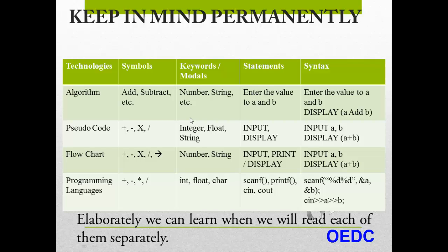For the flowchart we write some of the symbols, and for the programming language we have separate symbols, keywords, statements, and their corresponding language to learn separately. Some of the symbols, keywords, and statements — syntaxes for the flowchart — and for the programming language we have separate symbols, keywords, statements, and their corresponding language.